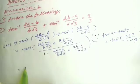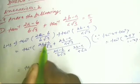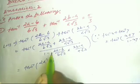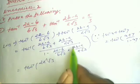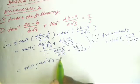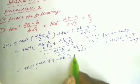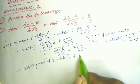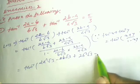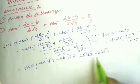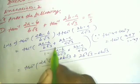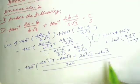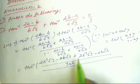Now calculating the numerator: (2a−b)×(a√3) = 2a²√3 − ab√3, and (b√3)×(2b−a) = 2b²√3 − ab√3. The combined numerator is 2a²√3 − ab√3 + 2b²√3 − ab√3, all over the common denominator b√3 × a√3 = 3ab.